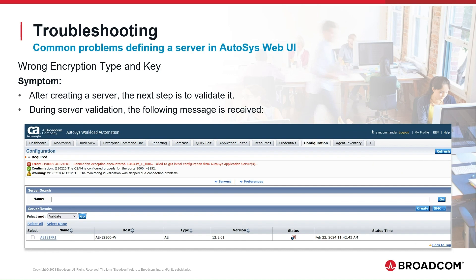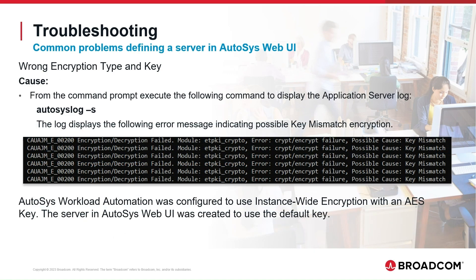Connection Exception Encountered: Failed to get initial configuration from Autosys Application Server. We use the Autosys Log command with the S option to display the application server log for more information. The server log displays an error message indicating a key mismatch. The server was created using the default key, however Autosys instance-wide encryption was configured with a custom AES key, resulting in a key mismatch.